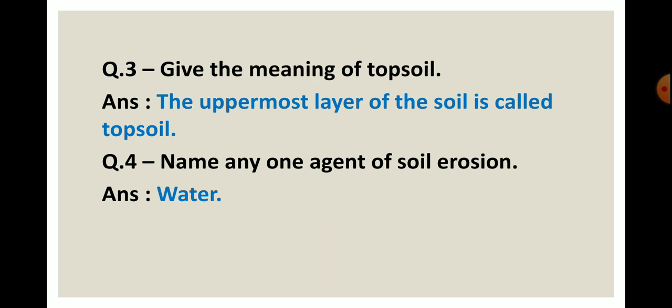Next question, name any one agent of soil erosion. Ismein aapko kisi bhi ek soil erosion ke agent ka naam likhna hai. Jab maine agents of soil erosion explain kiya tha, usmein aapki syllabus mein four types ke agents of soil erosion the. Like water, wind, deforestation, overgrazing. Aap in four mein se koi bhi ek agent ka name likh sakte hain. Maine hai ya phir likha hai, water. Aap in four mein se koi bhi ek agent likh sakte hain.